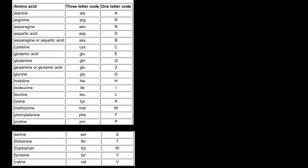Threonine has H as its second letter, tryptophan has R, and tyrosine has Y. If we put them in alphabetical order, H comes first. So threonine's one-letter abbreviation is going to be T, since its second letter comes first alphabetically among the three.